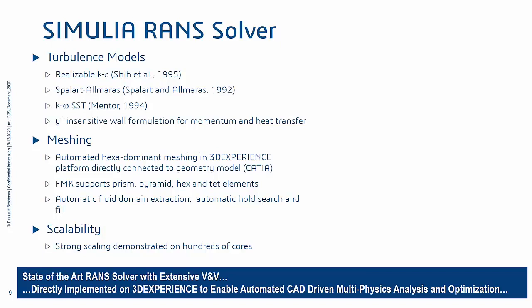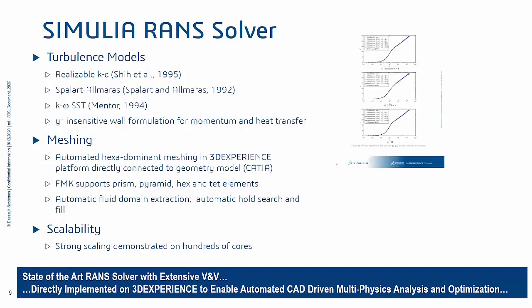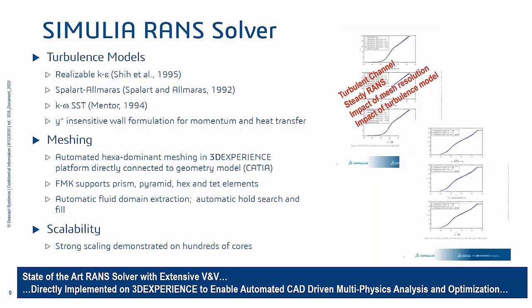Turbulence models include the Realizable K-Epsilon model, Spalart-Allmaras model, and the K-Omega SST model. The solver supports a whole host of different mesh types, including hexadominant hexahedral meshes, tetrahedral pyramids, and near-wall prismatic elements. It is highly scalable, demonstrated to be effective up to hundreds of cores. Verification and validation activities include turbulent channel flow and flat plate cases demonstrating recovery of the log law of the wall for a turbulent boundary layer on different mesh resolutions and turbulence models. FMK allows for a Y-plus insensitive solution, and the turbulence model will adapt itself to provide a correct solution depending on whether you are in the viscous sublayer or log layer.